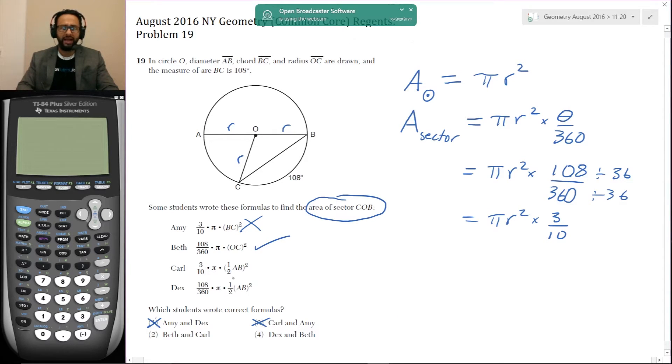So now let's see Carl and Dex. Carl has the three tenths right there and he has pi. And then he has half AB. AB is the diameter, so half AB is the radius, because diameter is equal to two r. So in fact, Carl is correct. So this is the answer. And that's it.